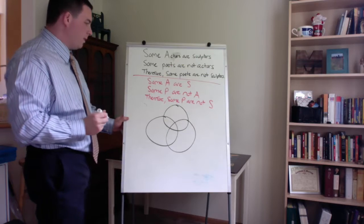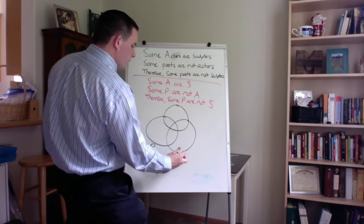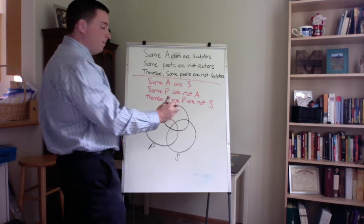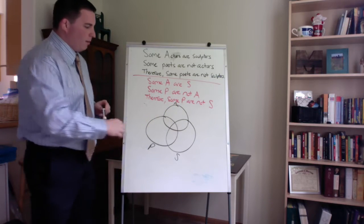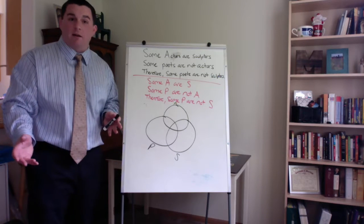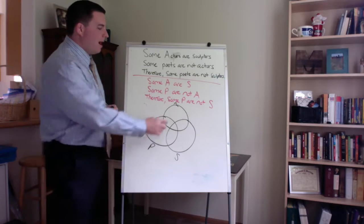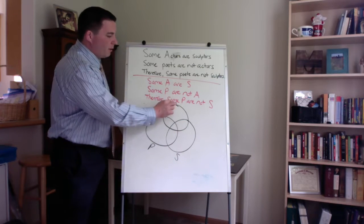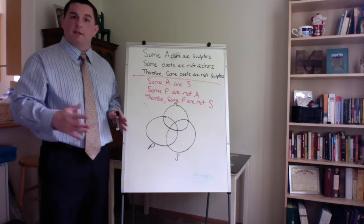There are three circles there. So P would go here, S would go here, and A, our middle term, go right up top there. Again, where you place the letters doesn't matter as long as you're consistent. I always follow this method because it's the same every time. Middle term goes on the left circle, major term goes to the right, minor term on top. You can do it differently, but make sure you're consistent throughout.